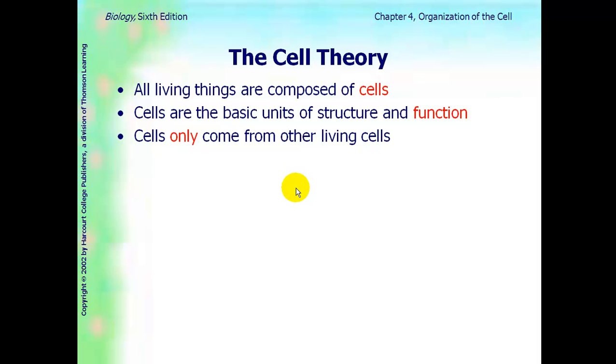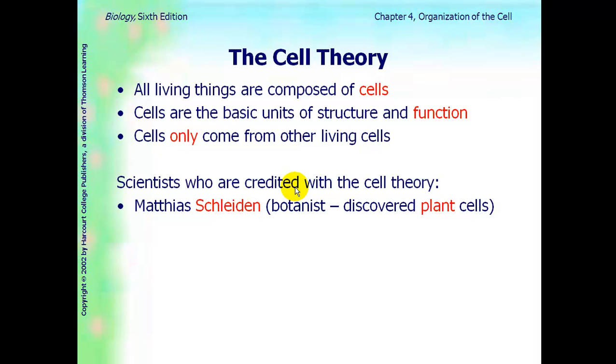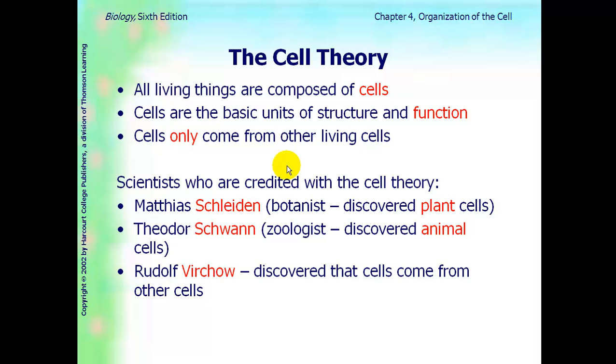There are three scientists that are credited with the cell theory, and they are Schleiden, who also discovered that all plants are made of cells. You have Schwan, who discovered that all animals are made of cells. And then you have Ruchow, who discovered that cells come from other cells.